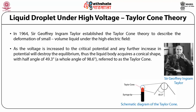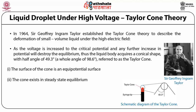As the voltage is increased to a critical potential, any further increase in potential will destroy the equilibrium. Thus, the liquid body acquires a conical shape with a half angle of 49.3 degrees and a whole angle of 98.6 degrees, referred to as the Taylor cone, as shown in the figure. Taylor also demonstrated that the shape of such a cone approaches the theoretical shape just before jet formation within the electro-spinning process. Taylor's derivation is based on two assumptions: first, that the surface of the cone is an equipotential surface, and second, that the cone exists in steady-state equilibrium.